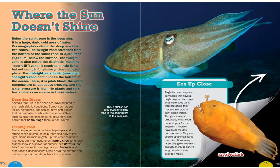Many deep-sea predators have large eyes and a strong sense of smell to help them find prey in low light. Some animals migrate up the water column to find food, but most depend on marine snow for energy. Marine snow is a shower of nutrient-rich detritus that falls from the sunlit zone above. Bacteria and other ocean decomposers break down the detritus and release important nutrients back into the water. The cuttlefish and the anglerfish are examples of animals that live in the deep sea.